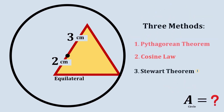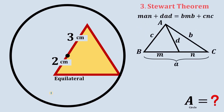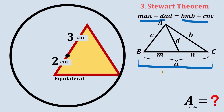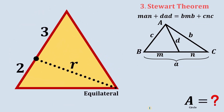Now let's begin with the third solution: the Stewart theorem. To memorize the formula for Stewart's theorem, use the sentence: 'A man and his dad put a bomb in the sink.' This corresponds to the figure that represents the Stewart theorem. We need the radius, and all sides of the equilateral triangle equal 5 centimeters. Let's apply the Stewart theorem.